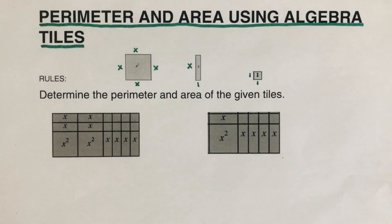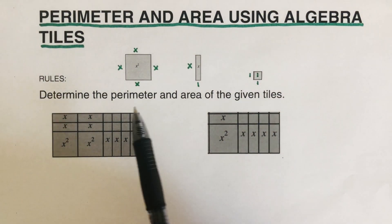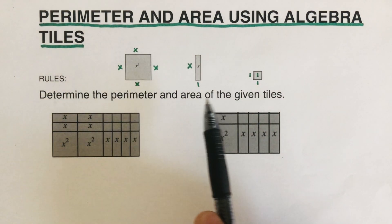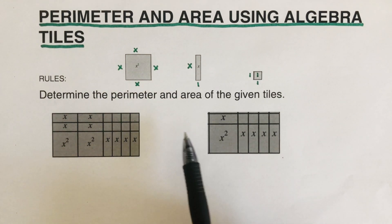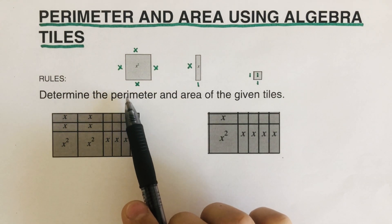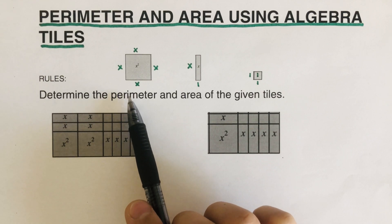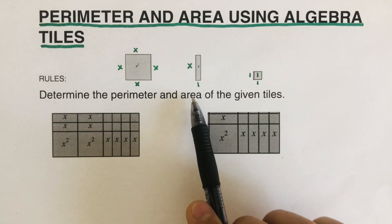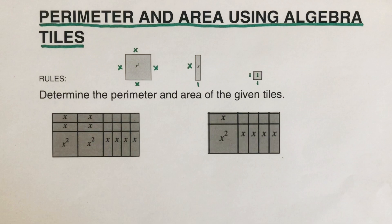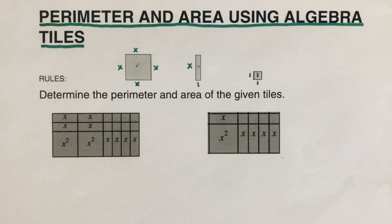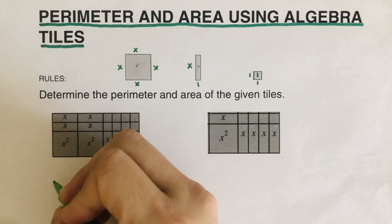Let's jump into the first example. We are going to determine the perimeter and the area of these given tiles. Perimeter will give us an idea on combining like terms, and the area concept will be used in factoring using area as a sum and product. Let's find the perimeter first.